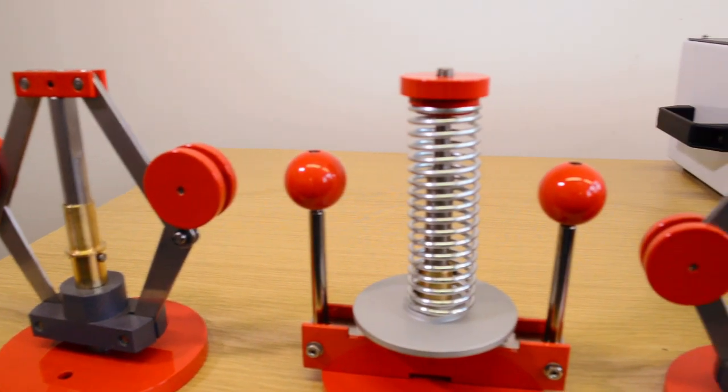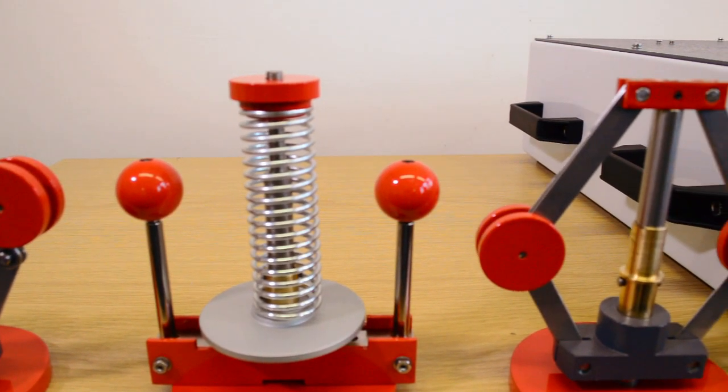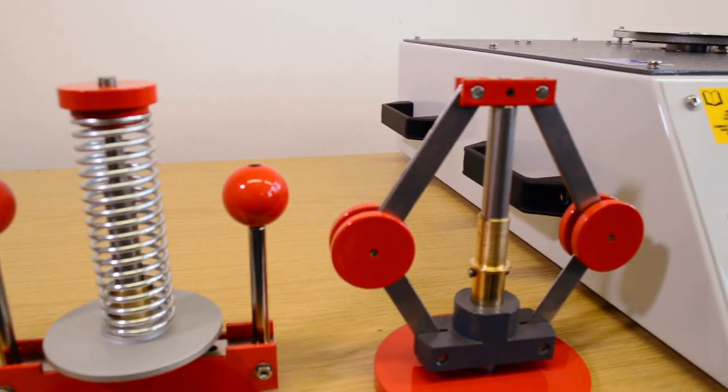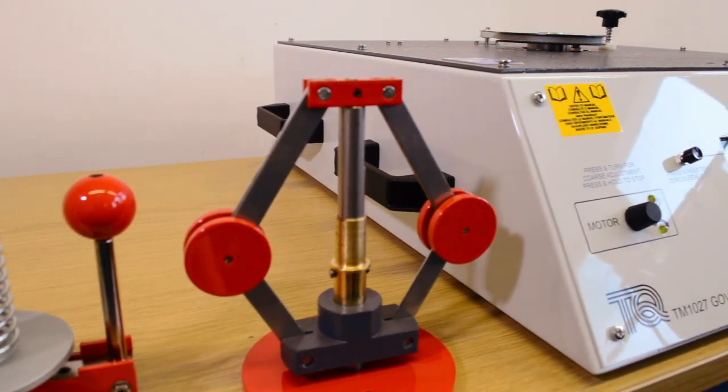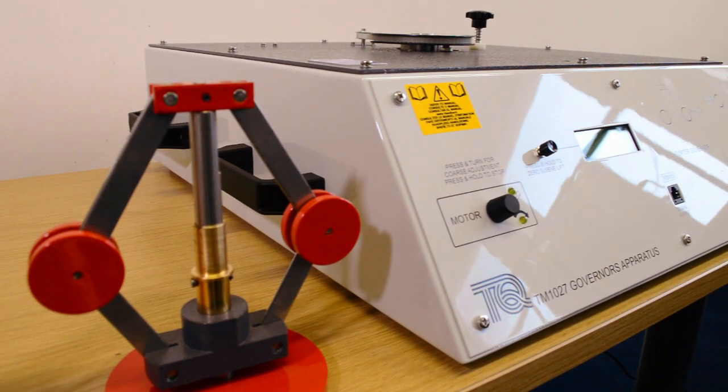Tech Equipment 1027 is a portable, self-contained benchtop unit that demonstrates the effects of speed, mass, geometry and other variables of governor characteristics.